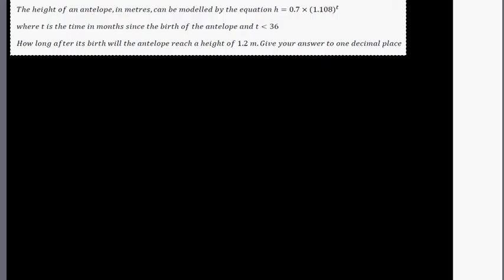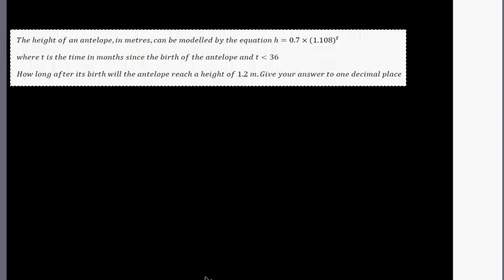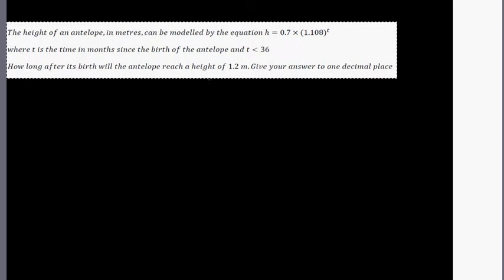The height of an antelope in meters can be modeled by the equation h equals 0.7 times 1.108 raised to t, where t is the time in months since the birth and t is less than 36. This is modeling the growth of an antelope for 36 months, which is 3 years.